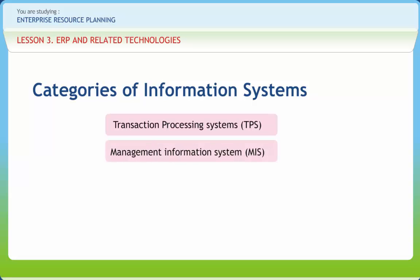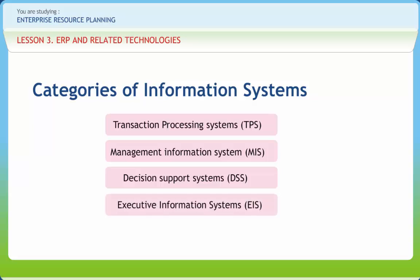A management information system is mainly concerned with internal sources of information. MIS usually takes data from the transaction processing systems and summarizes it into a series of management reports. Transaction systems are operations oriented, whereas management information systems are data oriented. Decision support systems are specifically designed to help management make decisions in situations where there is uncertainty about the possible outcomes. DSS often involves data warehouses and executive information systems.